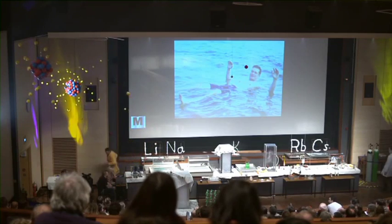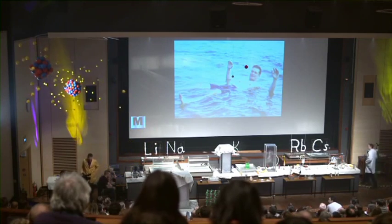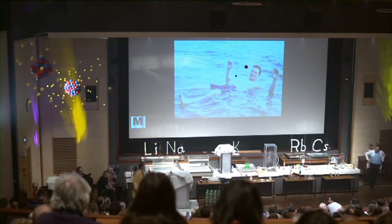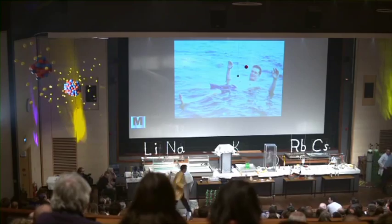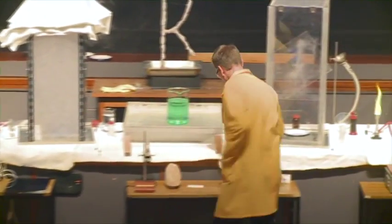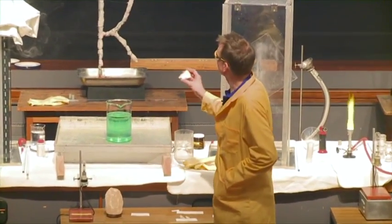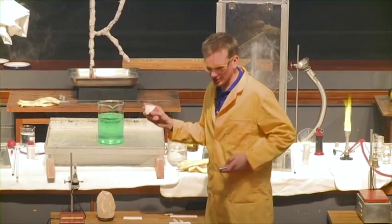So how do we get our cesium, then? This also comes as a mineral. I have some cesium mineral here. This is pollucite — this is the mineral that contains cesium.